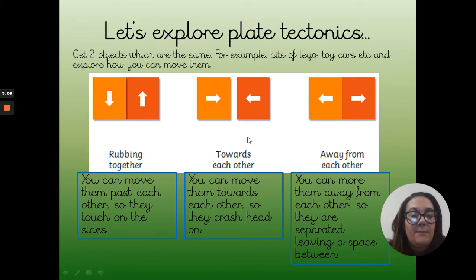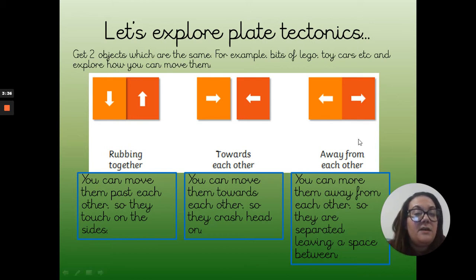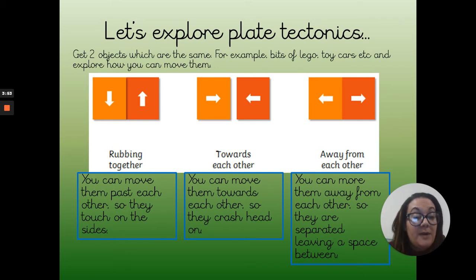For the middle example, put your objects facing each other, like two cars facing each other, but not touching — they're apart. Move them towards each other and you'll notice they eventually bump into each other head on. This is what happens with some of the plates. Then for the third example, have the objects back-to-back touching, and move them away from each other. You'll notice that you end up with a space in between. These three ways are the ways that plates can move. I tend to think of it as jigsaw pieces floating on a bed of jelly, and there are different ways that they can move.